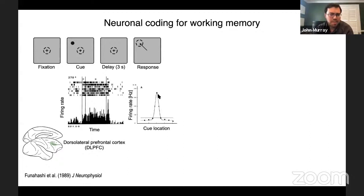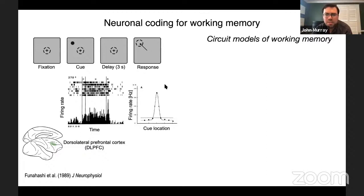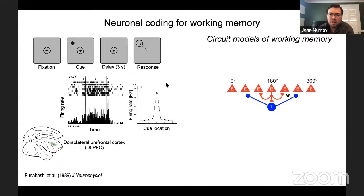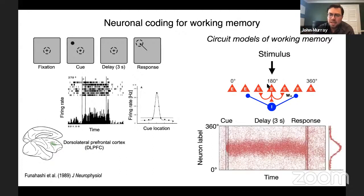This persistent activity was tuned for the cue location, establishing the idea of tuned sensory-like representations persistently maintained across the working memory delay to guide future behavior. This framework influenced a lot of theoretical circuit models of working memory, such as attractor circuits in which neurons have sensory tuning and strong local recurrent excitatory-inhibitory connectivity, such that when a stimulus excites a subset of neurons, they continue to maintain that representation across the delay through internal reverberation in the form of persistent activity.